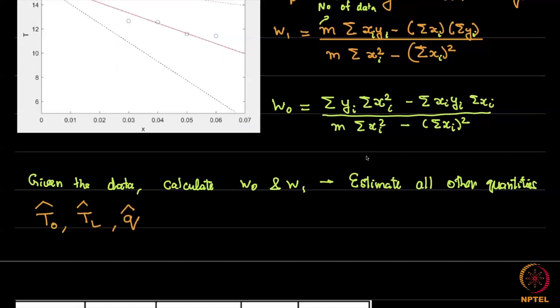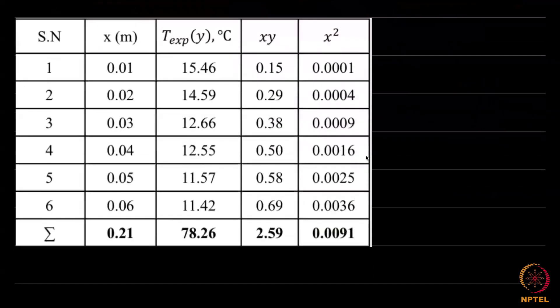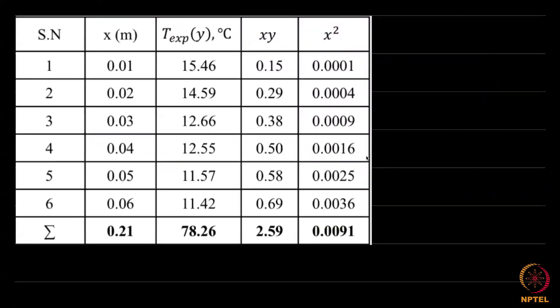How would we calculate these? Once we have the model, once you have the model of T hat being w0 plus w1x, obviously you can find out T at x equal to 0, T at x equal to the length which is 0.07 as given in the question. And then you can find out q as minus k dt dx. Now suppose we use the summation expression.